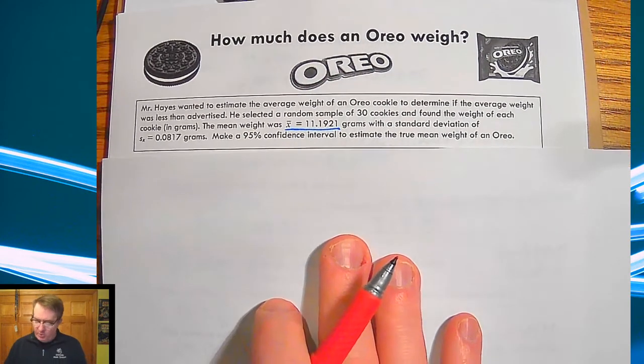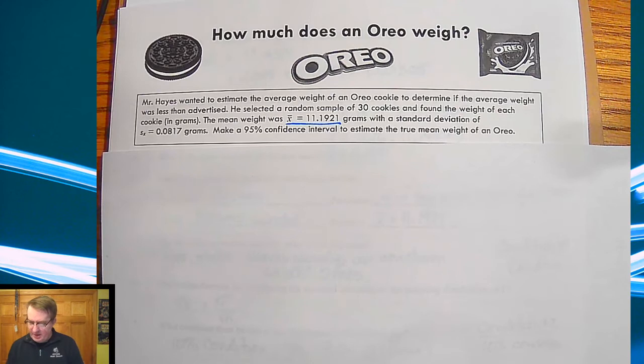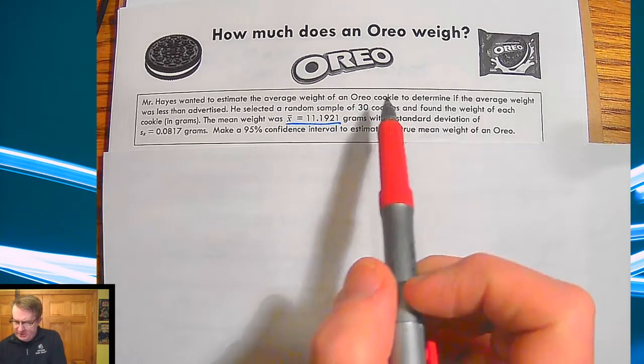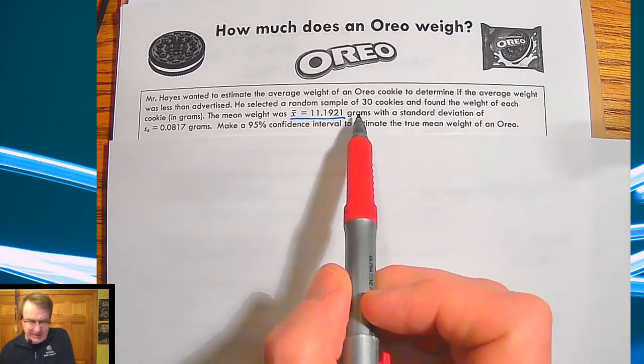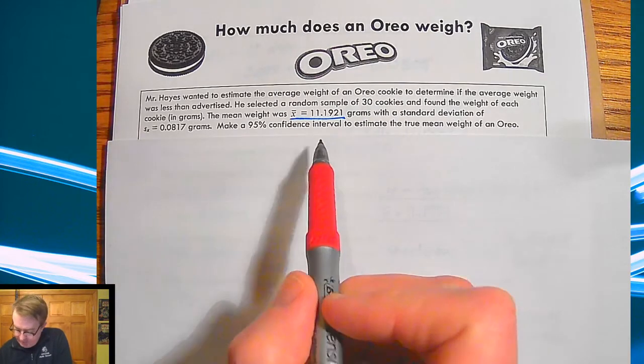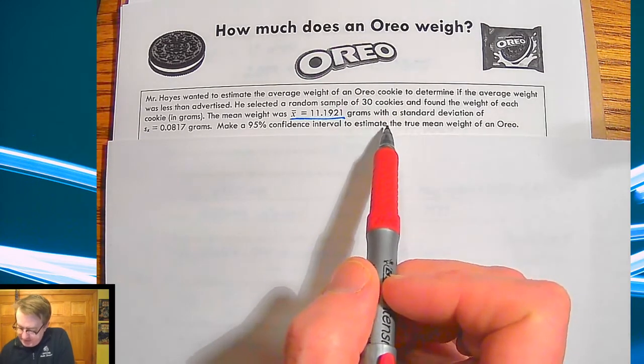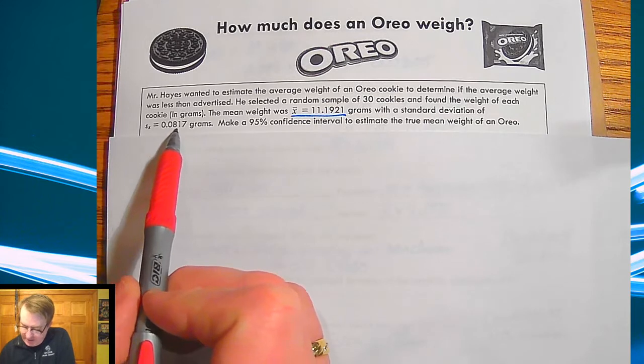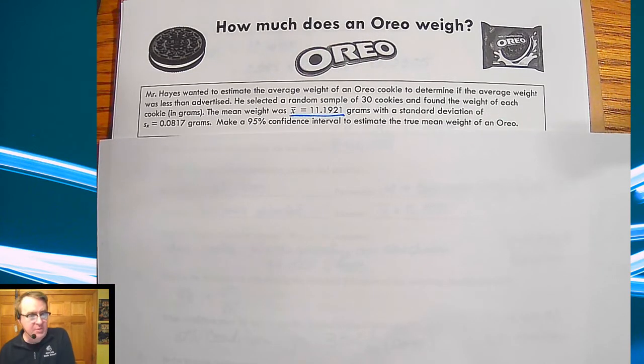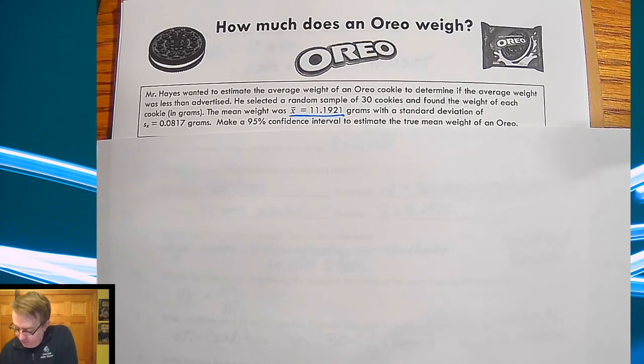Anyway moving on so we're going to talk about Oreos and so I wanted to estimate the average weight of an Oreo cookie and actually later on we may do one of our double stuffed Oreos really double stuffed but we usually use it after exam. So anyway so the average weight is less than advertised I selected a random sample of 30 cookies found each weight here is my weight right here of 11.1921 grams with a standard deviation of 0.0817 grams make a 95% confidence interval to estimate the true mean of the weight of an Oreo.